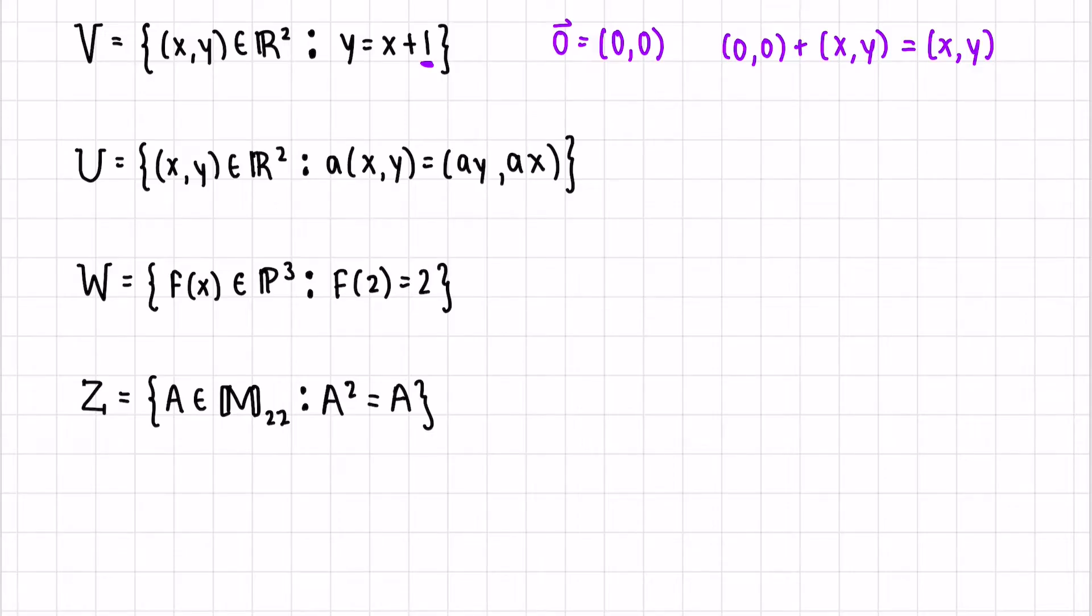What is the 0 vector in this case? Can we generate it, is the question. So if we put x is 0, y is 1. If we put x is negative 1, y is 0.